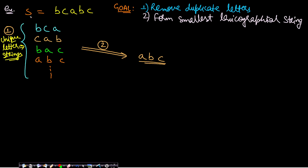Assume your string s is 'bcabc'. We have two goals. First, remove duplicate letters — from the given string there may be multiple possible strings, like 'bca', 'abc', and others, but all must have the same length as the number of unique characters. Second, among all those possible unique-letter strings, we take the smallest one in lexicographical order, which in this case is 'abc'.